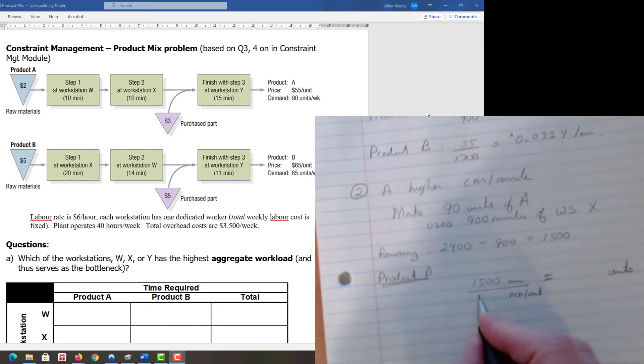That data we had just before—20 minutes per unit of product B is consumed by workstation X. We have 1,500 minutes available, divide by 20, and it comes out evenly. Product B, we can produce 75 units.